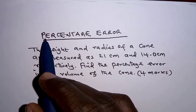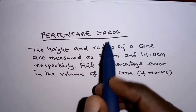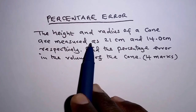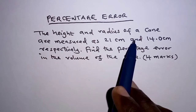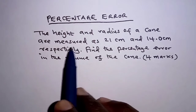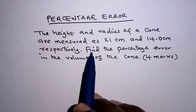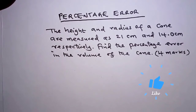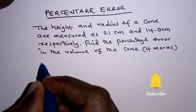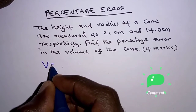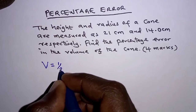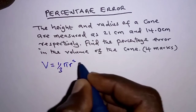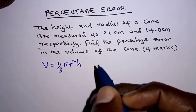Today's discussion is about percentage error. The height and radius of a cone are measured as 21 centimeters and 14.0 centimeters respectively. Find the percentage error in the volume of the cone. The first thing, let us get the formula for the volume of a cone. Volume of a cone is given as one-third times the base area, where the base area is π r squared, times the vertical height h.